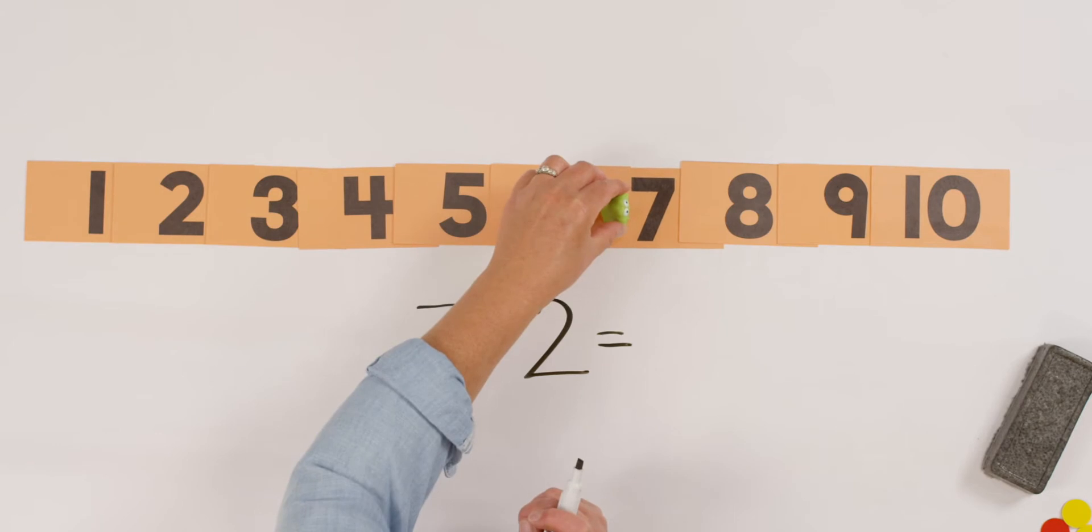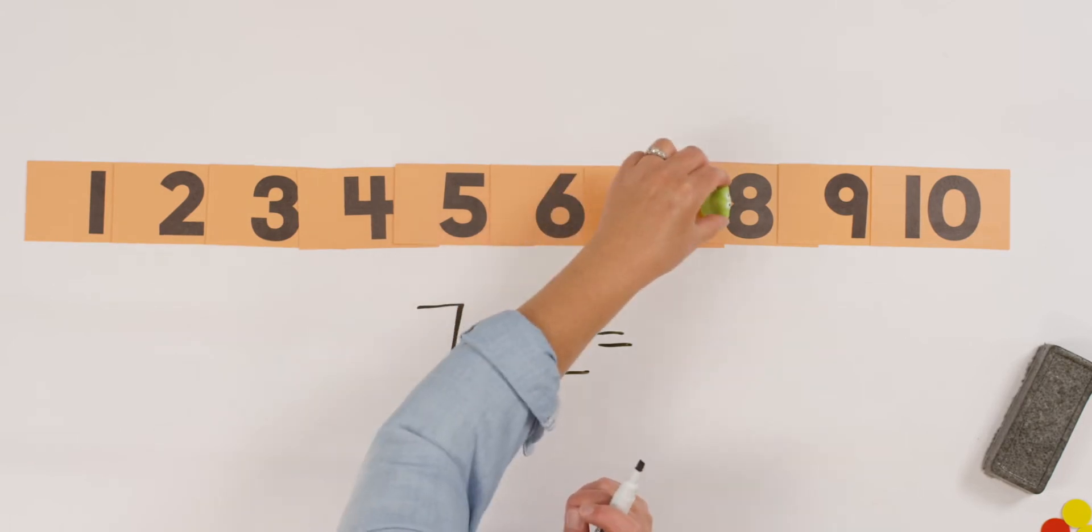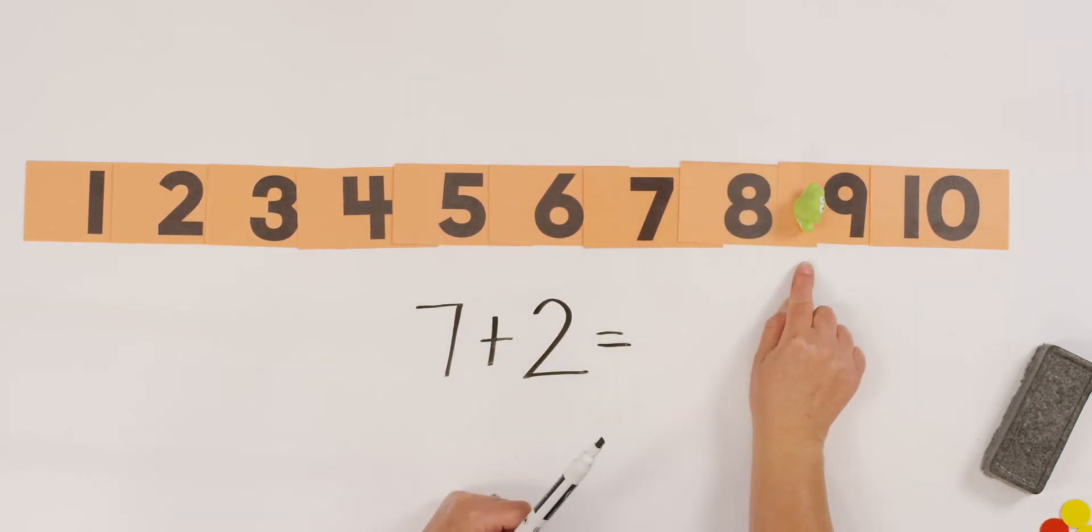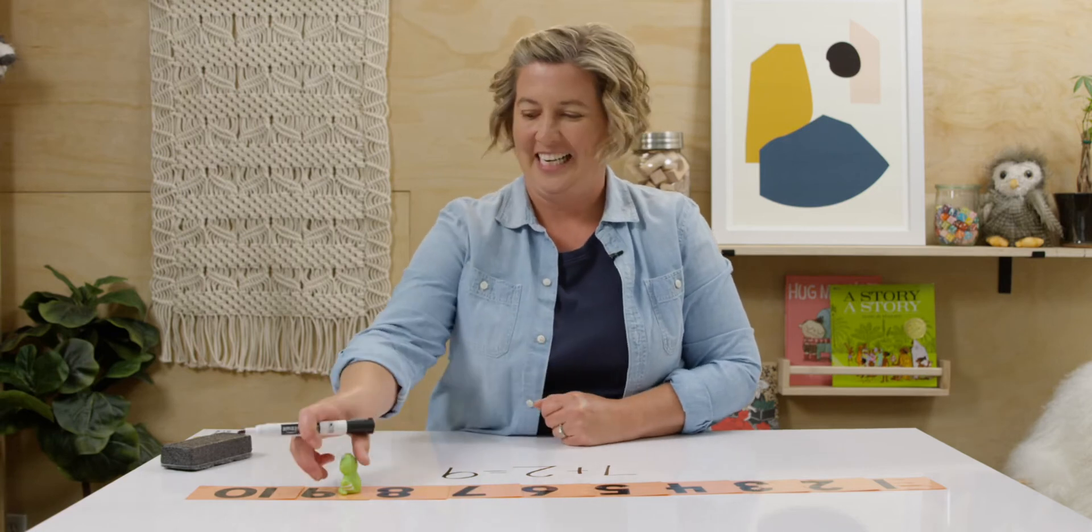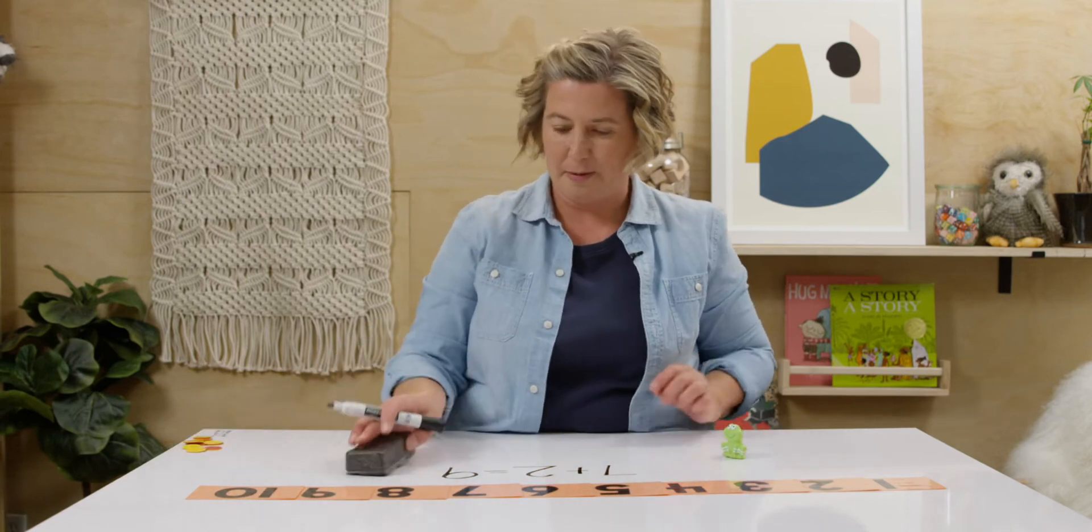Seven. And let's hop two more. One, two. What did I land on? Nine. Seven and two make nine. Are you also starting to recognize these as number bonds? Seven and two make nine. Here we go. Let me erase my board.